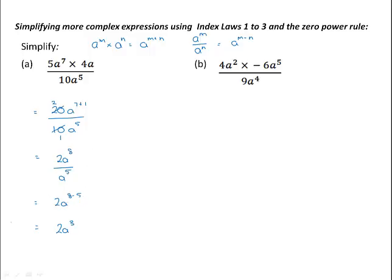Rather than writing out a to the power 8 take 5, we can also see that a to the power 5 divides into a to the power 8, leaving a to the power 3. So we could do this by cancelling as well.